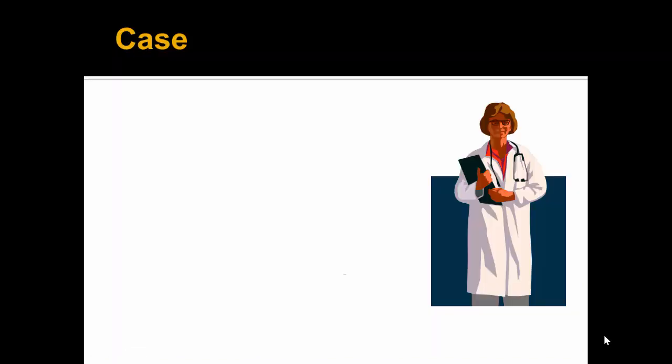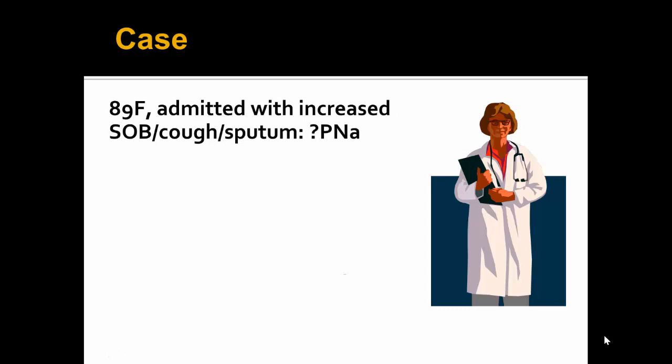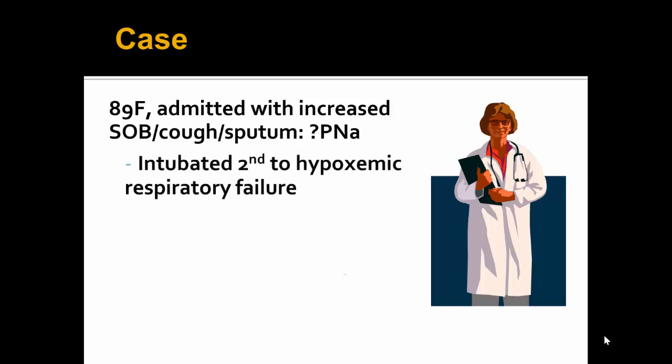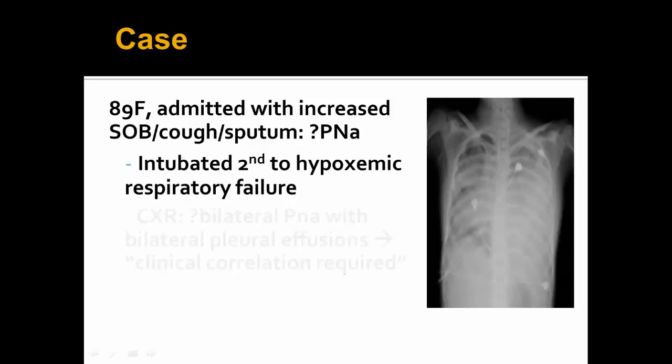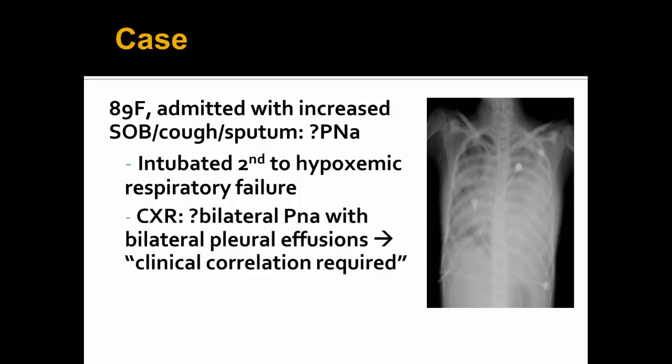Let's begin with a case. You are presented with an 89-year-old female who is admitted to hospital with increased shortness of breath, cough and sputum. The working diagnosis is possible pneumonia. The presentation was quite severe as she required intubation secondary to hypoxemic respiratory failure. When we look at the chest x-ray, there is potential bilateral pneumonia present along with potential bilateral pleural effusions. Because the radiologist is not at the bedside, there was the added phrase 'clinical correlation required.' The team decides to start antibiotics, but the underlying question was whether or not this patient requires urgent chest drainage.